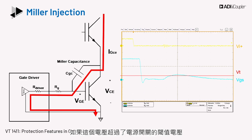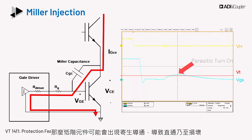If the threshold voltage of the power switch is exceeded, there could be a parasitic turn-on of the low side device, causing shoot-through and possible damage.